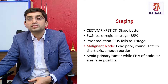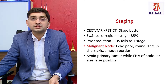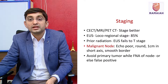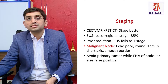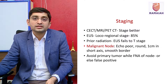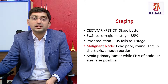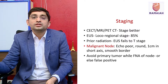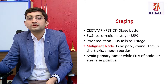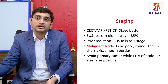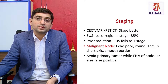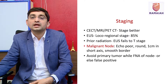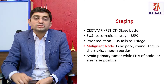A malignant lymph node on EUS should be echo-poor, round, around a centimeter in size, with distinct smooth borders, and it should lose the normal cortex-medullary configuration of a benign node. Whenever performing fine needle aspiration of a node, always avoid the primary tumor in the needle path, otherwise you may upstage the tumor.